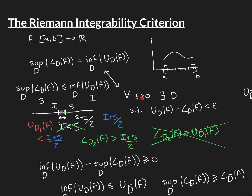So overall, we've shown that these two statements are mathematically equivalent to one another. We've shown that if the function is Riemann integrable, then the Riemann integrability criterion holds true; and if the Riemann integrability criterion is true, then the function is Riemann integrable — they are if and only if statements. The practical use is that the criterion is often slightly easier to verify than the definition directly, so many times when we want to show that something is Riemann integrable, we'll choose to show the criterion holds instead.